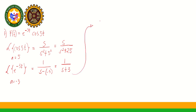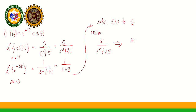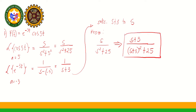Substituting S + 3 for S in S over S² + 25, we replace every S with S + 3. This gives us (S + 3) over (S + 3)² + 25. So that is the Laplace transform of e^(−3T) cos(5T).